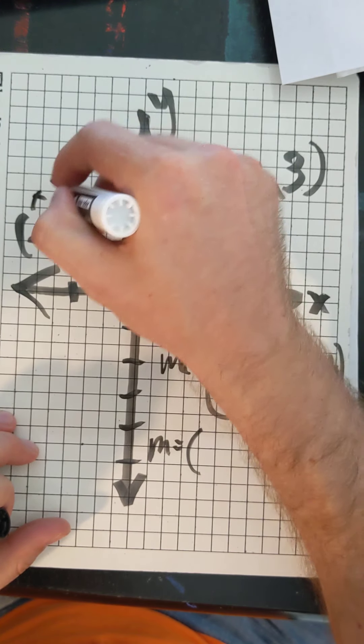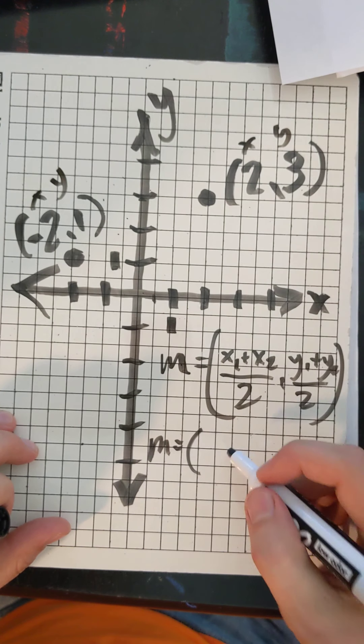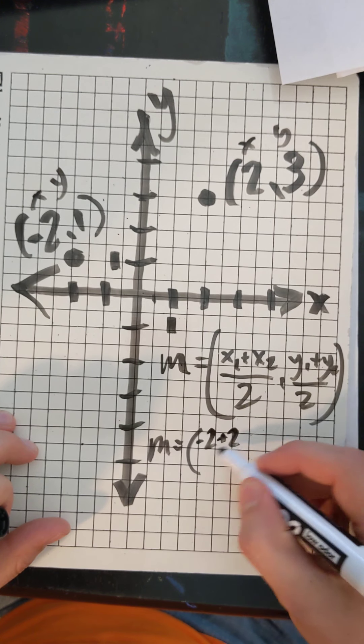Okay. I feel like I've emphasized that sufficiently. Our two x values. We have x, y. We have x, y. Okay. So, we have negative 2 and 2. So, negative 2 plus 2 divided by 2.